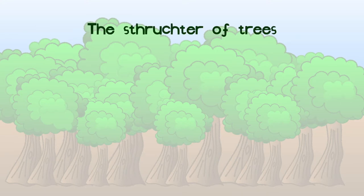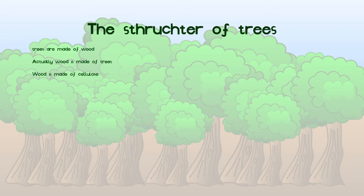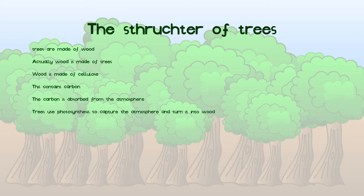The next slide is on the structure of trees. I have discovered in my research that trees are made of wood. I have also discovered wood is made of trees, as trees come before wood. I have also discovered trees are made of long strings of carbon, hydrogen and oxygen called cellulose. How dendrological. As I have stated, this material contains a lot of carbon. The carbon for this is obtained from the atmosphere. Trees use a process of photosynthesis to capture this carbon from the atmosphere and turn it into the biomass of the tree.